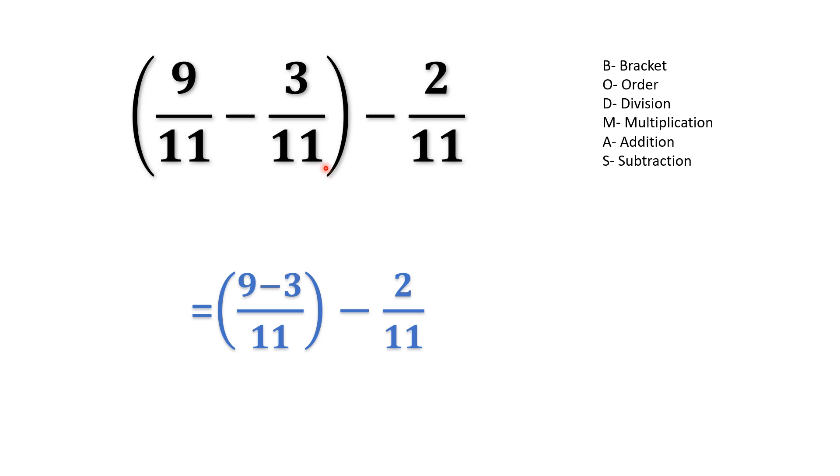If we try by the LCM method, 11 into 1 gives us 11, so that 1 we are multiplying with 3 we get 3 over 11. So we will not think all of these, we'll just put 11 as the denominator and then we will put the numerators with the operator 9 minus 3. After that we keep minus 2 over 11 as it is.